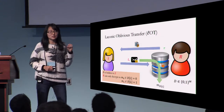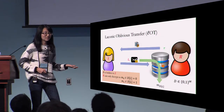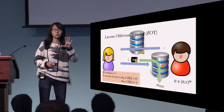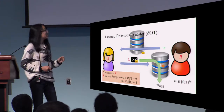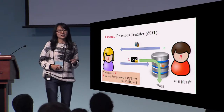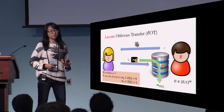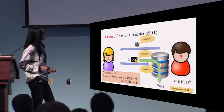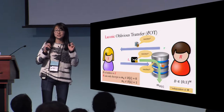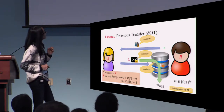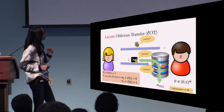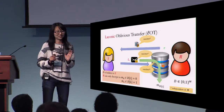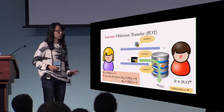If you use existing techniques of two-message OT, you can do something like this, but the first message will be huge — it would grow with the size of the database. Laconic OT has the additional requirement of efficiency: these two messages and the computation here are succinct. By succinct, I mean the communication complexity and computational complexity are independent of the size of the database — it only depends on the security parameter. That's why we call it laconic OT.